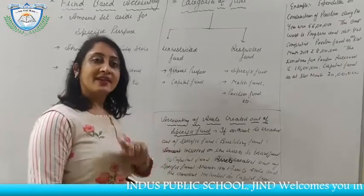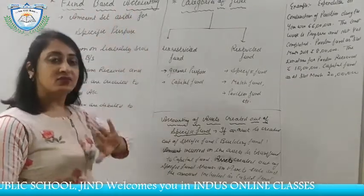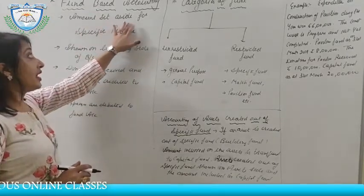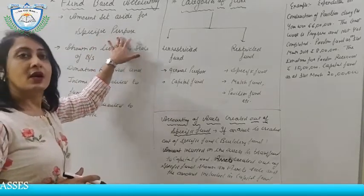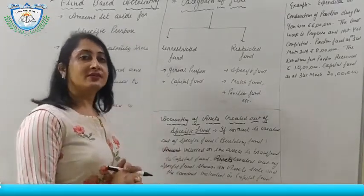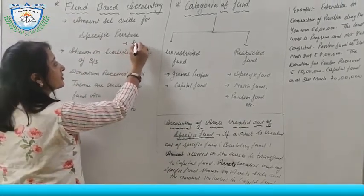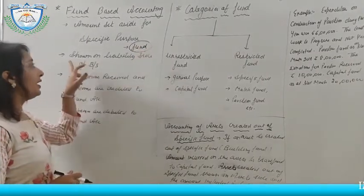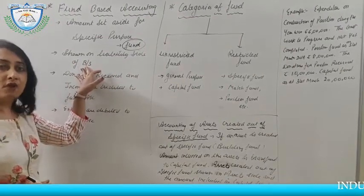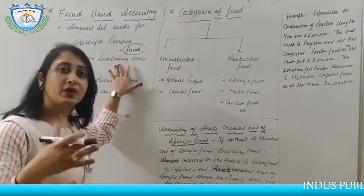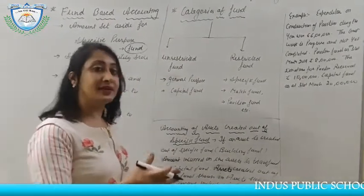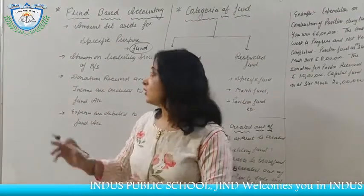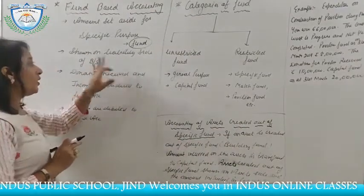Our next topic is fund-based accounting. First, what is a fund? An amount set aside or amount received for a specific purpose by a not-for-profit organization is called a fund. It is money received for a specific purpose, and it is shown on the liability side of the balance sheet — because until the specific purpose is fulfilled, for example constructing a building, it remains a liability.